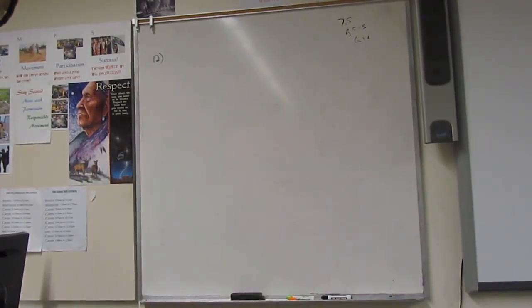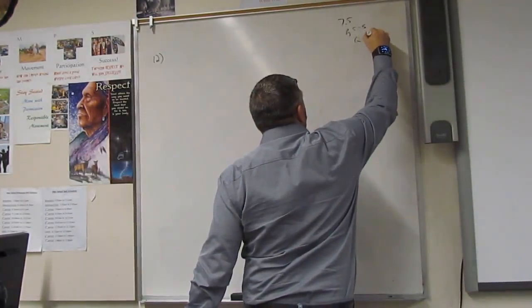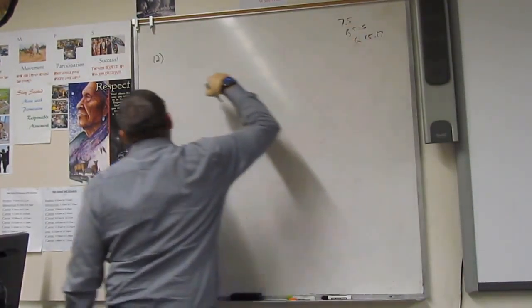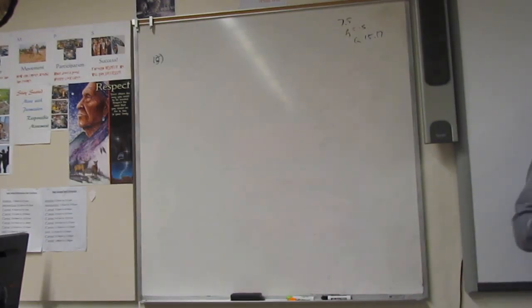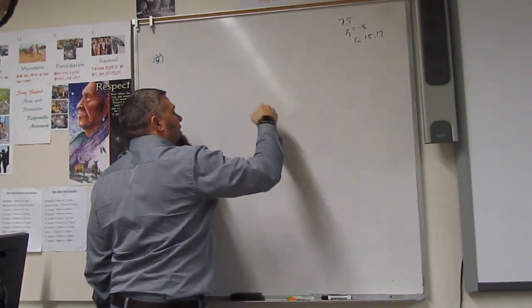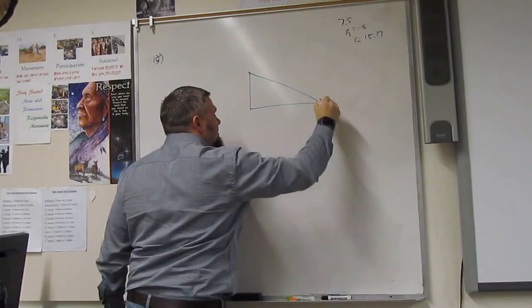Alright, for problem 15 and 17. We'll start with 15, but we need to kind of set this up. It's a story problem. A park at the end of a city block is a right triangle. Just make yourself a right triangle.